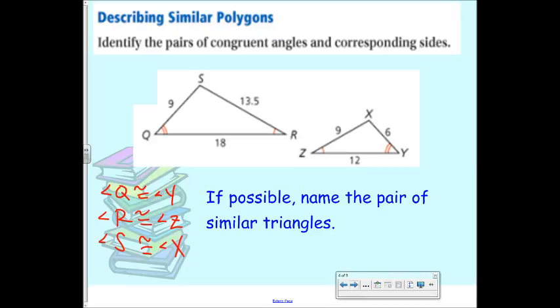The sides are proportional. Make sure we're working with corresponding sides. So if Q is congruent to Y, which one does QR go with? QR goes with YZ. So I'm doing 12 over 18. All right. What about SQ? XY. XY. Good. So that would be 6 and 9. And then what about SR? XZ. All right. So that should be 9 and 13.5.